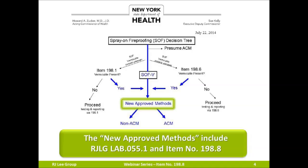The New York State Department of Health decision tree is used to determine which method should be used for asbestos determination of spray-on fireproofing. If vermiculite is present in the fireproofing, then one of the two new methods must be used for asbestos analysis. If vermiculite is not present, then one of the two older New York State Department of Health methods, 198.1 or 198.6, is used. Both the Lab 055.1 and 198.8 methods are approved by the New York State Department of Health for the analysis of vermiculite-containing spray-on fireproofing materials.